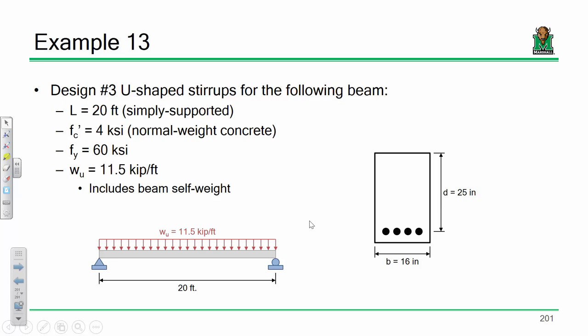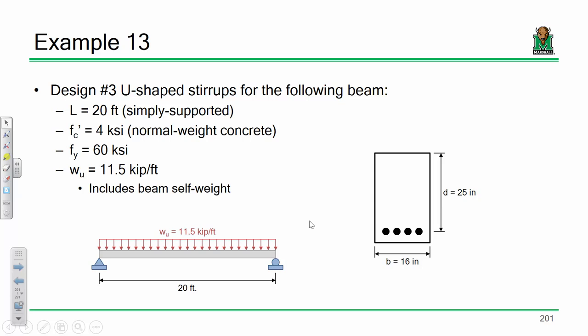This is the example we did last time, and we produced a few different designs, each more economical than the last. The purpose was so you'd understand how to lay out stirrups. Today's example is more straightforward — start to finish. What makes it a little more complicated is the loading: we are not dealing with a beam that just has a distributed load; we have distributed loads and point loads.